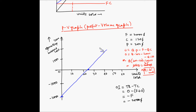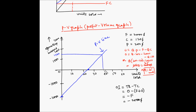Now we can use this PV line to find out the number of units to be sold in order to earn a targeted operating income. Let's say we want to earn a target operating income of one thousand five hundred dollars. From the point representing one thousand five hundred dollars on the y-axis, we draw a horizontal line which touches the PV line, and then we go down to get the number of units to be sold. This is how you can use the PV graph to get the number of units based on the targeted operating income.